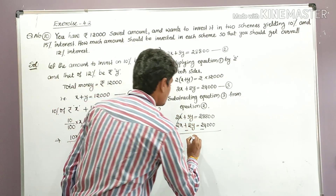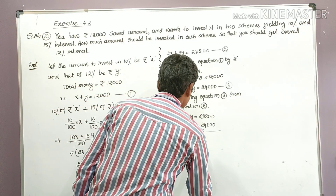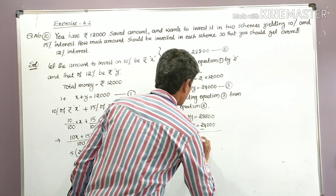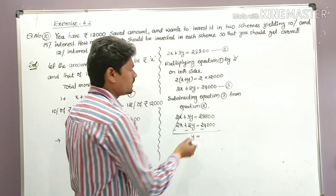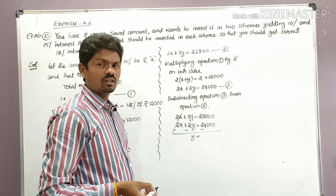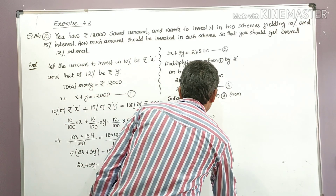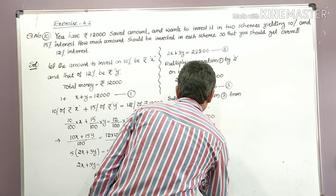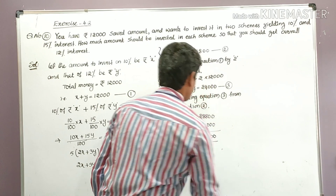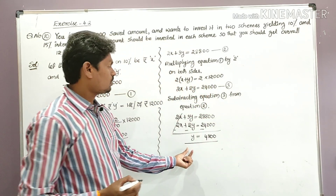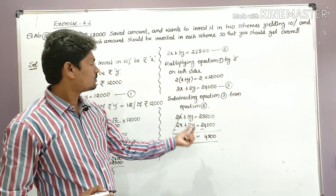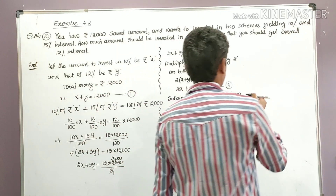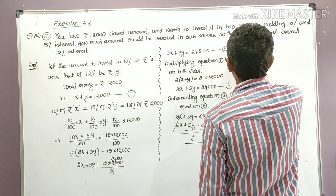By subtracting, 2x minus 2x gets cancelled. 3y minus 2y gives us y. And 28,800 minus 24,000 is 4,800. So y is equal to 4,800. Now we substitute y equal to 4,800 in Equation 1.